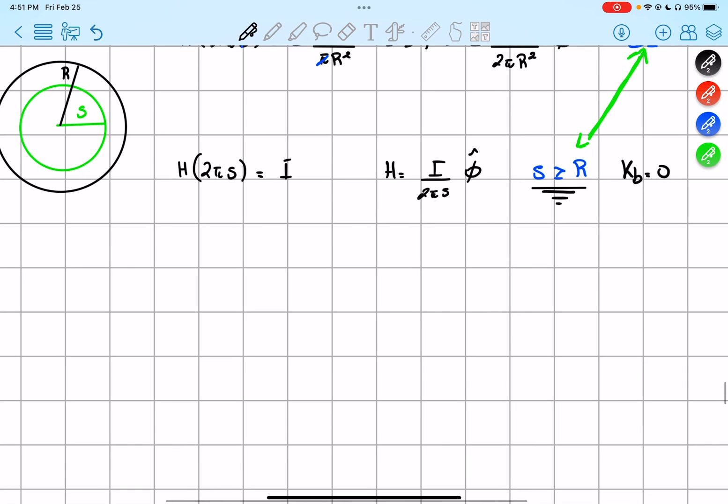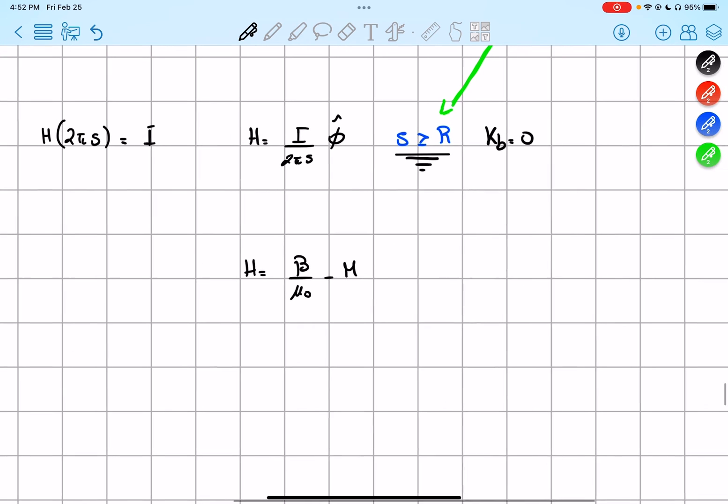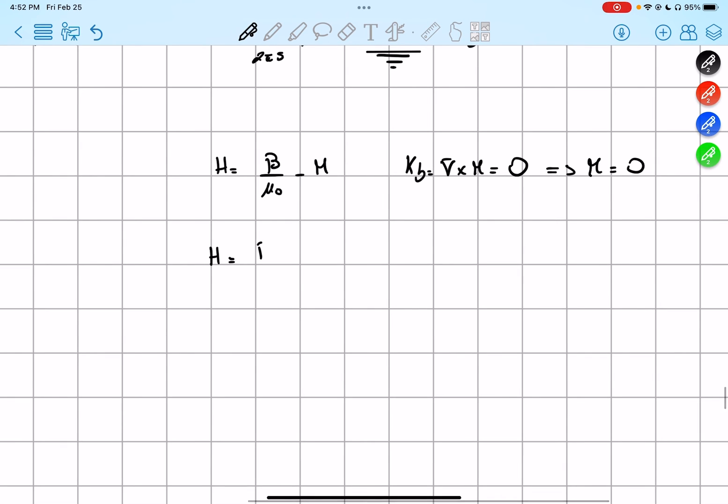So that means that H, which was equals to B over μ₀ minus M, will be simply... well, we say that Kb is equals to cross, I'm sorry, this part, so the current of m, so we just say that it's equals to 0, so M is equals to 0. So we have H is equals to B over μ₀, or H μ₀ is equals to B.